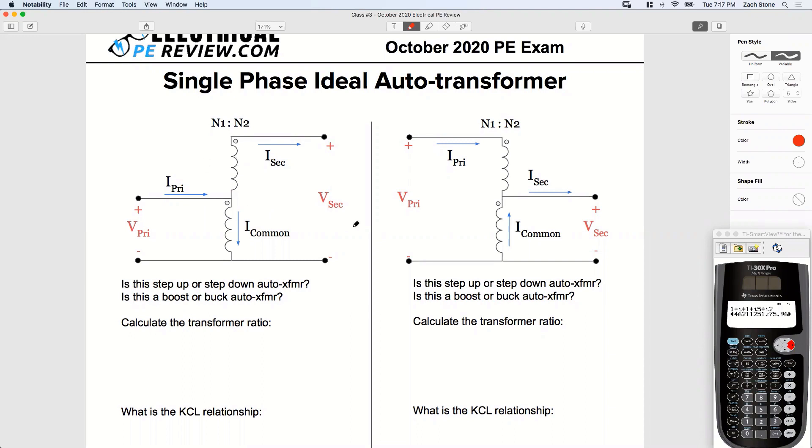We're going to start on the one on the left. So here's our common winding. Here's our series winding. Is this a step up or step down autotransformer? Who can answer in the chat? Is this step up or step down? Yeah, step up. How do we know? How do we know this is a step up?